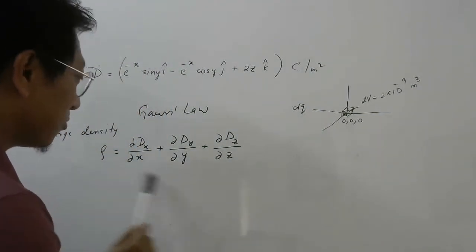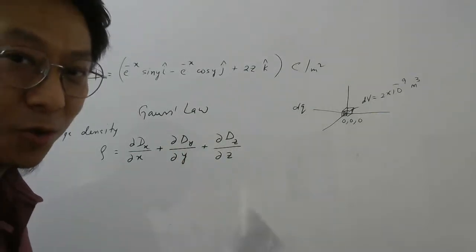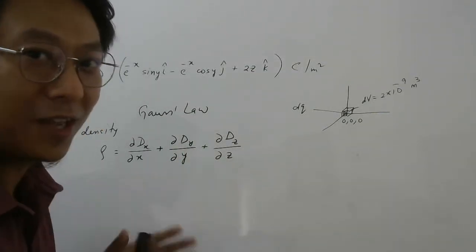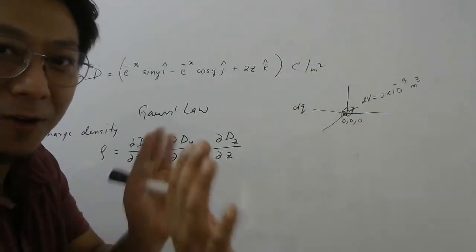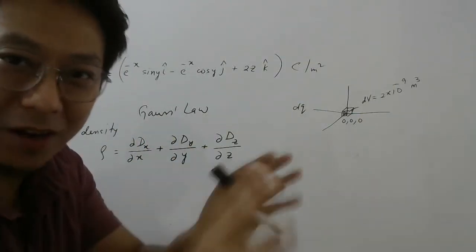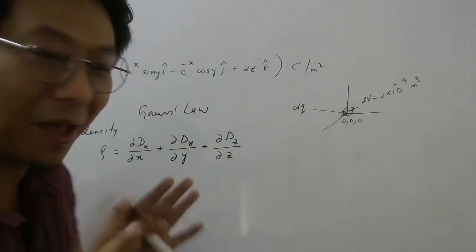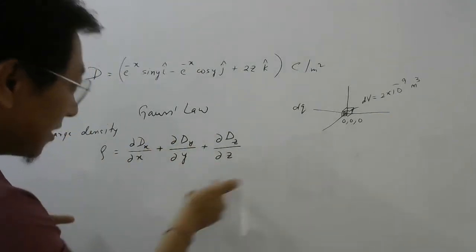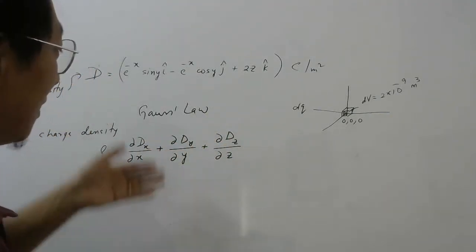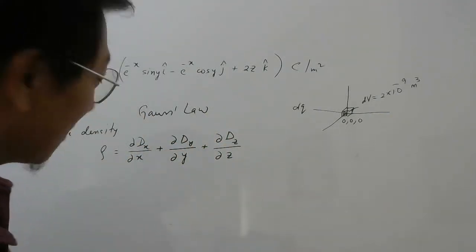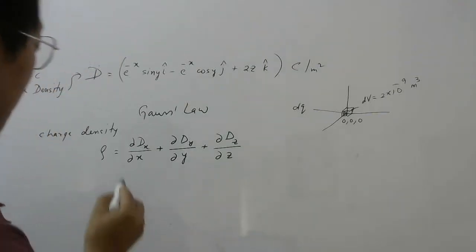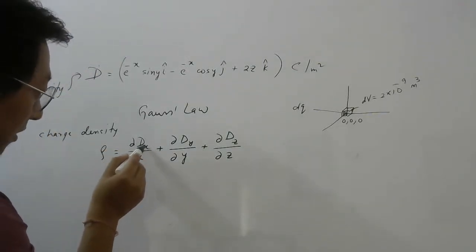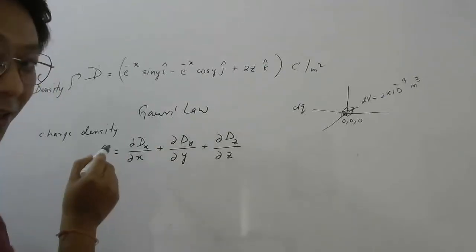Before I show you how this formula comes, let me show you that if you just assume you know this formula — if you say you don't need the derivation and are happy to memorize it — then it is very easy to get the answer. So let me show you that part first. This is differentiation of Dx with respect to x.